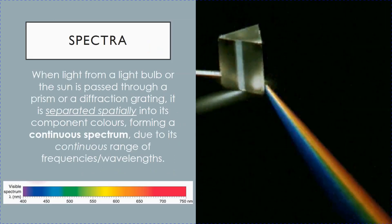To start off, let's look at the meaning of the word spectra. Spectra is the plural form of the word spectrum, which means a band of colors. An example of a spectrum is a rainbow.